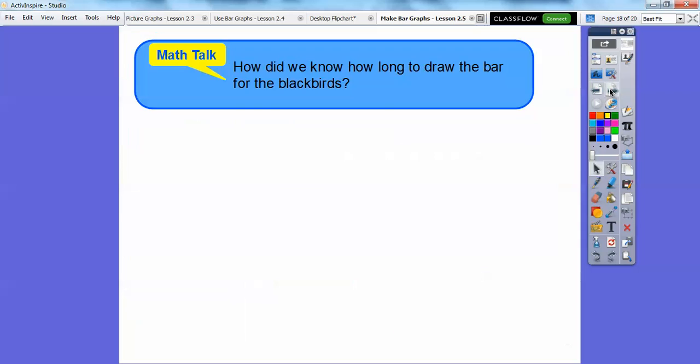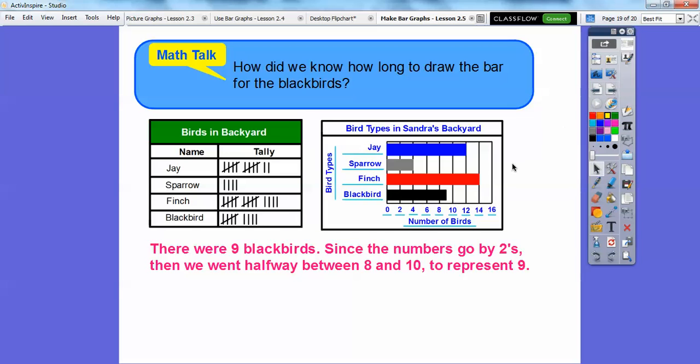How do we know how long to draw the bar for the blackbirds? There were 9 blackbirds, and since the numbers went by twos—0, 2, 4, 6, 8, 10—we went halfway between 8 and 10, and that represented the 9.